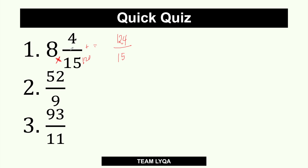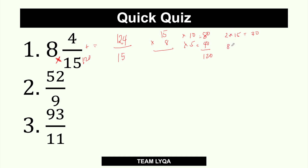If you're confused about how that became 120, you can always multiply it the long way. Or you can break it up: 8 times 10 is 80, 8 times 5 is 40, so 80 plus 40 is 120. Or since two 15s is 30, and 8 has four 2s, you can do 30 times 4. These are mental math shortcuts. The traditional method gives the same answer. So: multiply whole number by denominator, add numerator — 124 over 15.